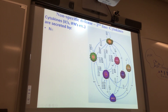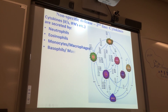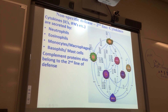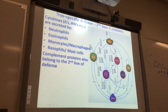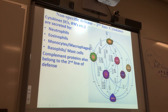Cytokines are secreted by all of these blood cells: neutrophils, eosinophils, monocytes, and basophils all secrete cytokines. More proteins in the blood in the second line of defense are complement proteins. We haven't talked about where they're made — they're a molecule, and they get made by cells in the liver.